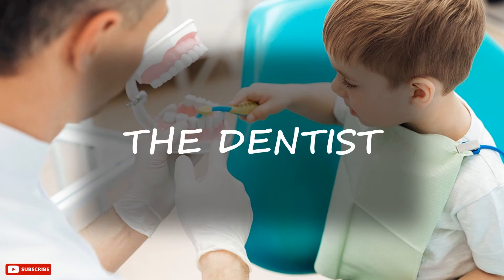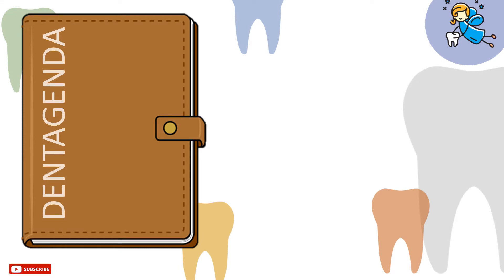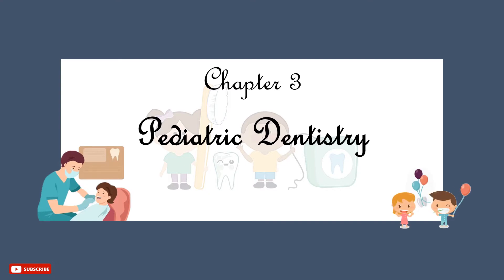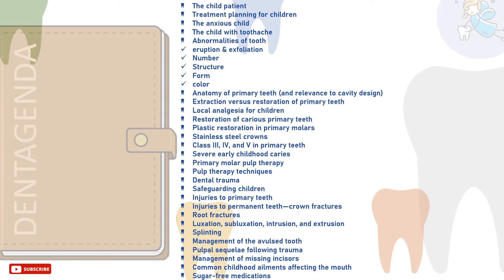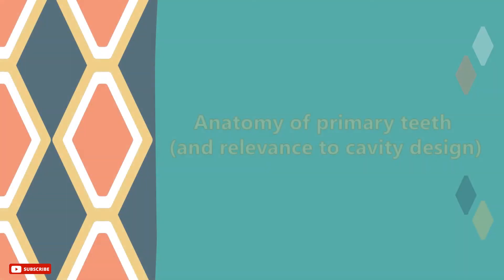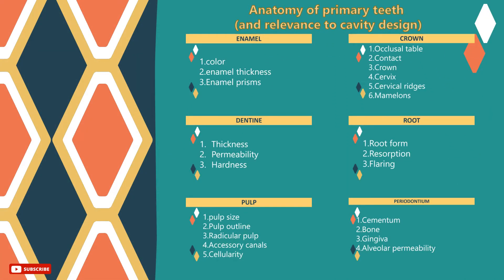Greetings, I'm the dentist. Welcome back to Dent Agenda. This is Chapter 3, Pediatric Dentistry. In this tutorial, we will discuss the anatomy of primary teeth in comparison to permanent teeth and how it affects cavity design. Primary teeth differ in several aspects from permanent teeth, affecting both the sequel of dental disease and its management.